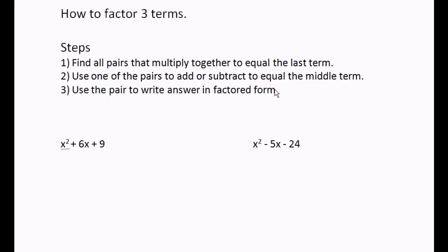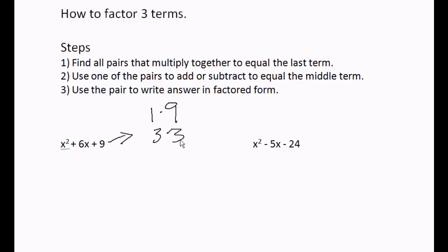Step three: use the pair to write your answer in factored form. Let's try these steps on the first problem. Step one: find all pairs that multiply together to equal the last term. The last term is nine. All pairs that multiply together to equal nine are one times nine, and three times three.